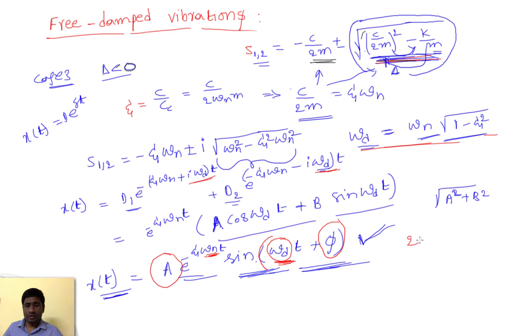When you want to find out the time period of this function, that is simply 2π by the coefficient of the variable—here the variable is t. So that is omega d. This is the time period; now it's not omega n.